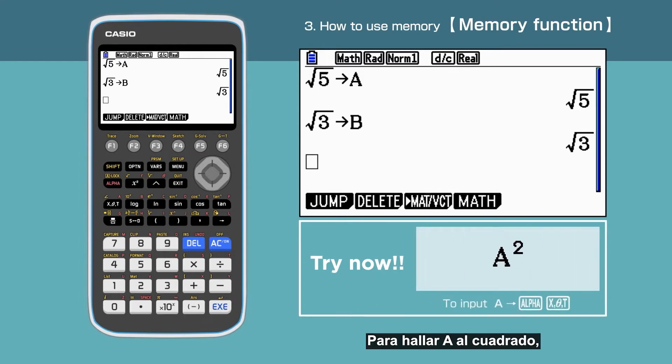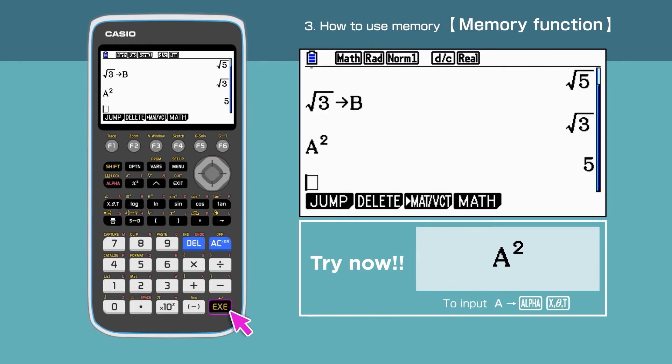Now, we are going to find A squared. Enter A squared. We have got the answer 5.